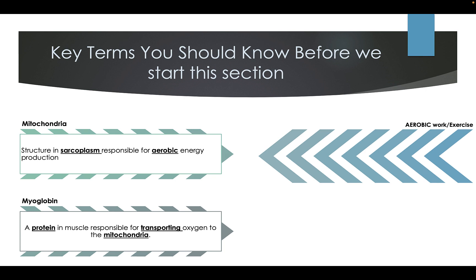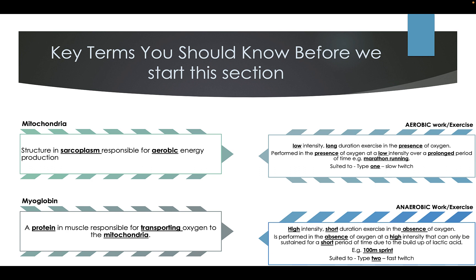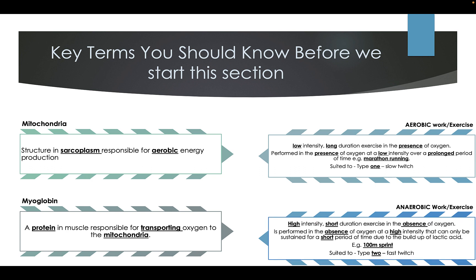Aerobic work: low intensity, long duration exercise in the presence of oxygen, performed over a prolonged period of time, e.g. marathon running, suited to Type 1 slow twitch fibres. Anaerobic work: high intensity, short duration exercise in the absence of oxygen, due to build up of lactic acid, e.g. 100m sprint, suited to Type 2 fast twitch fibres.